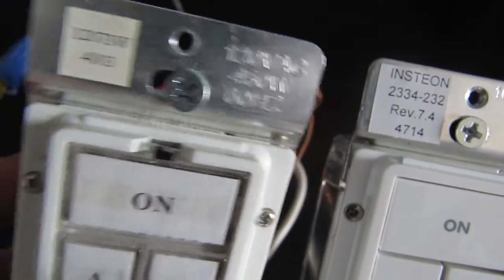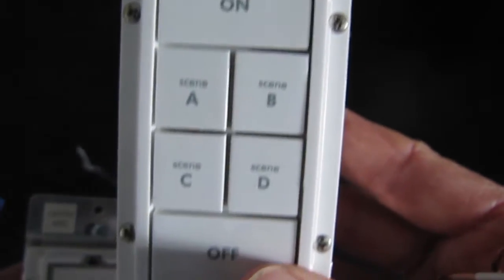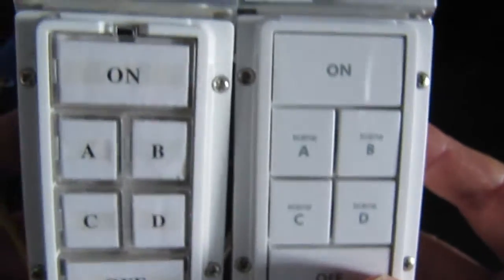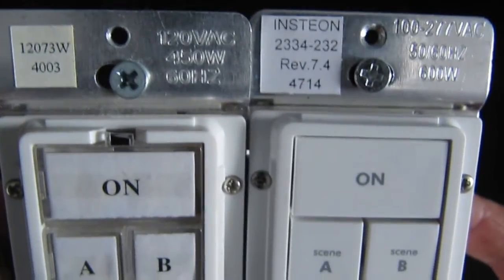So here are my two switches side by side. The old keypad link is on the left and the new one is on the right. The new switch is actually slightly thinner than the old one which might make stuffing the wires back into the box a little easier.